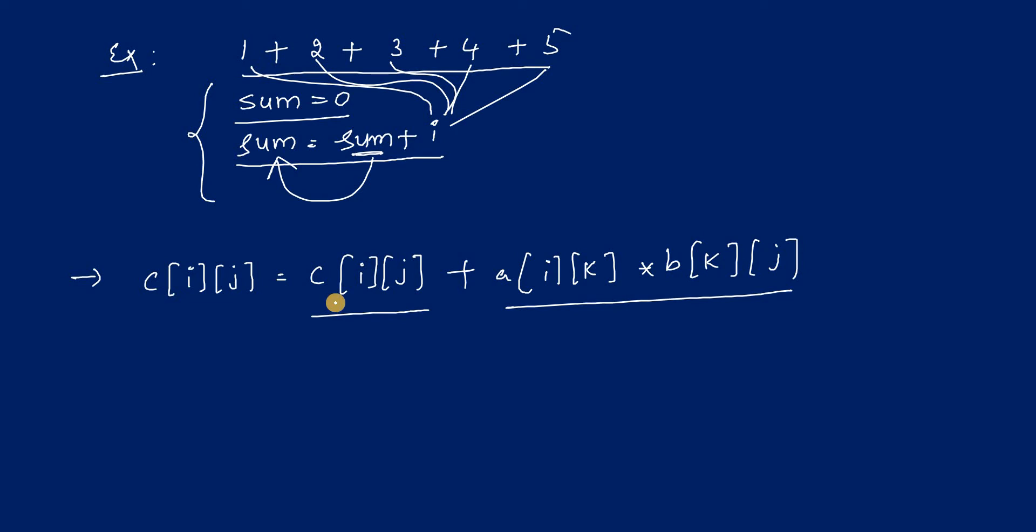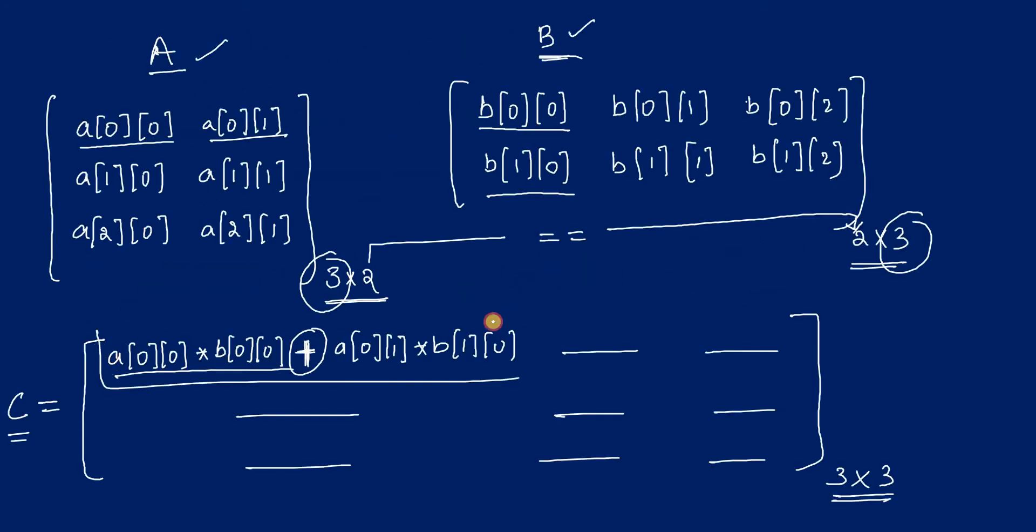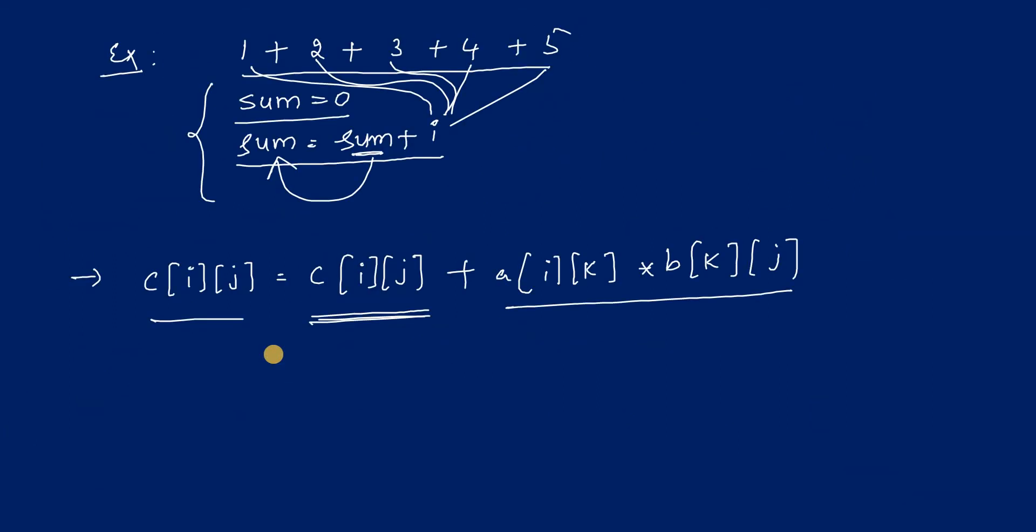Similarly, here also in our program, we are going to write this very important statement: C[i][j] equals C[i][j] plus A[i][k] into B[k][j]. This formula is used to find out a single element. Apply the same rule here, sum equals sum plus i. This formula is very very important for performing the matrix multiplication.